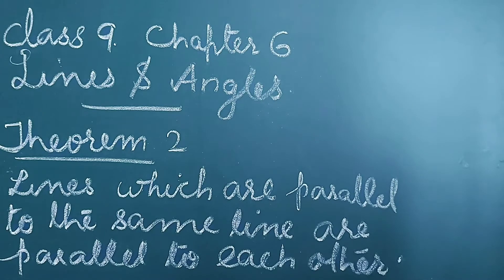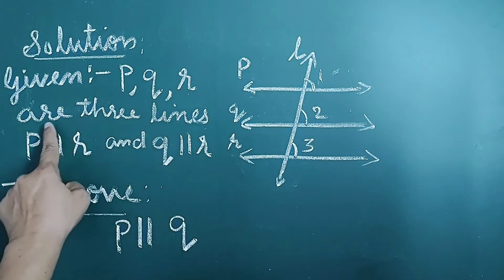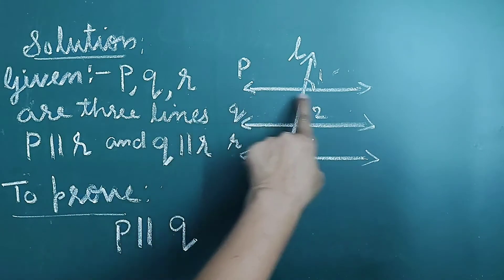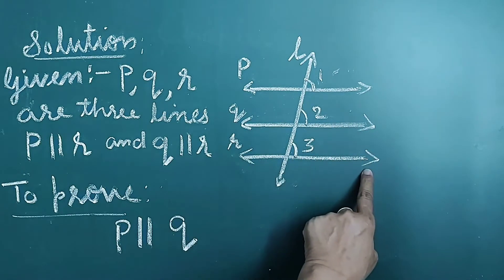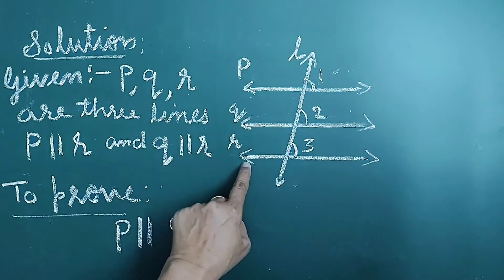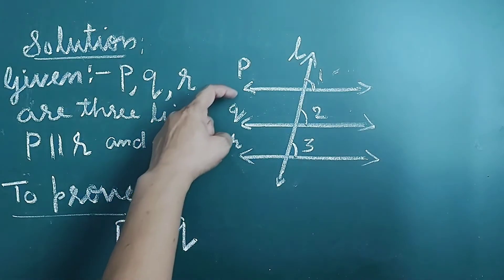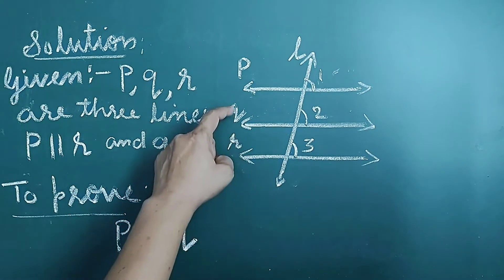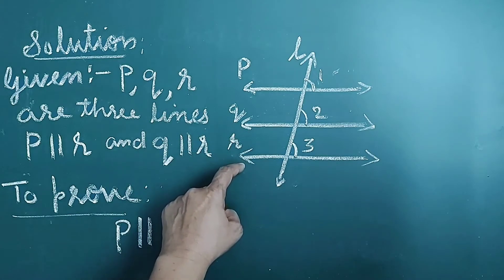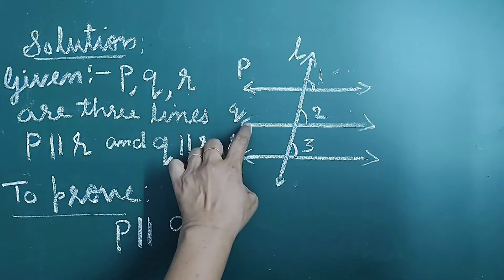Class 9, Chapter 6, Lines and Angles — Theorem 2: Lines which are parallel to the same line are parallel to each other. Given: P, Q, R are three lines where P is parallel to R and Q is parallel to R — that is, lines which are parallel to the same line R. We have to prove P is parallel to Q.